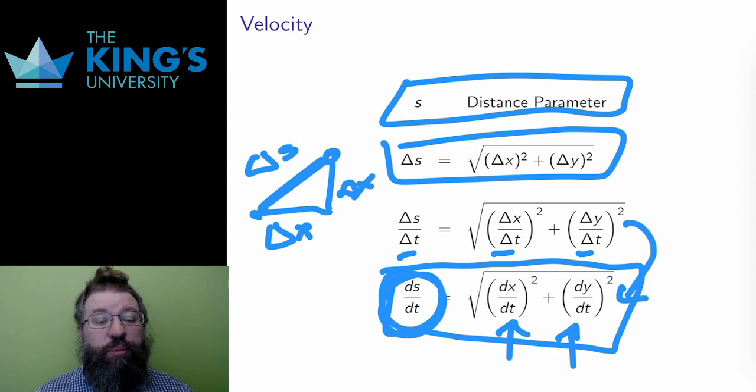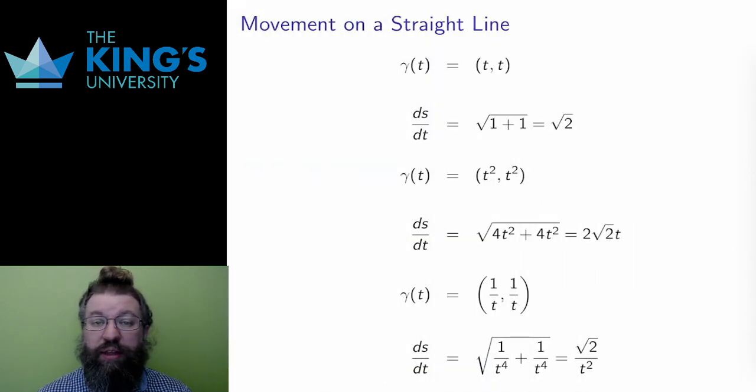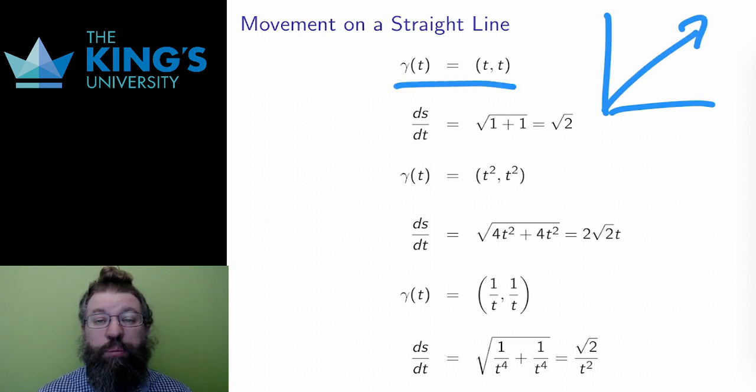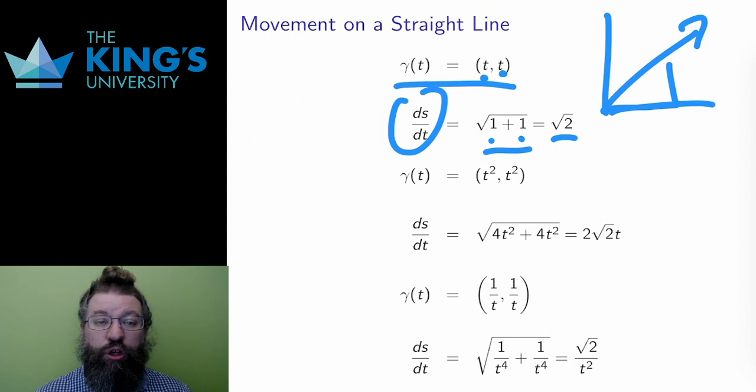Let me show you some examples. How fast is movement along a straight line? Gamma of t equals (t,t) is a curve which goes upward and to the right on a diagonal line. The two time derivatives are both 1, so the Pythagorean combination of these is root 2. Therefore, the speed of this curve is constant root 2 units of distance per unit of time. And this makes sense for uniform movement along a straight line. For every unit of time, the curve goes over 1 and up 1, which is the same thing as going root 2 along the diagonal.